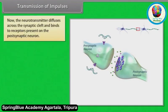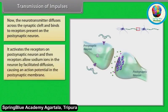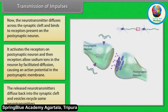The synaptic cleft is the gap between the pre-synaptic and post-synaptic neuron. The neurotransmitter diffuses across the synaptic cleft and binds to receptors on the post-synaptic neuron. It activates those receptors, which allow sodium ions into the neuron by facilitated diffusion, causing an action potential in the post-synaptic membrane. The released neurotransmitters then diffuse back into the synaptic cleft and vesicles recycle some neurotransmitters.